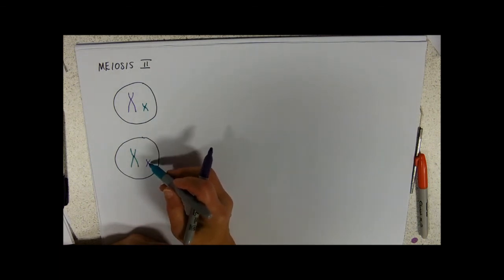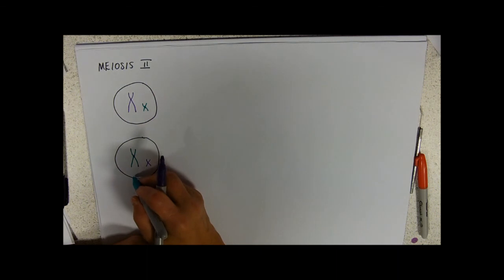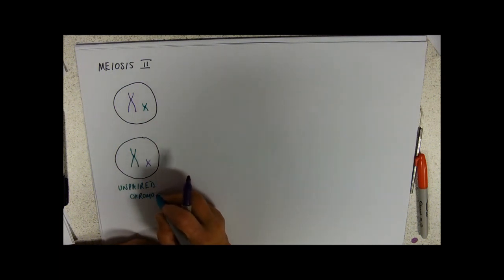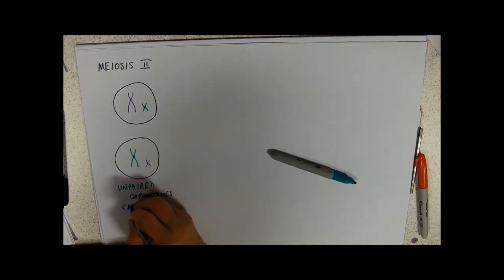So, these are unpaired chromosomes. And this means our cell is a haploid.